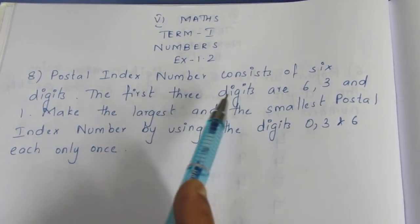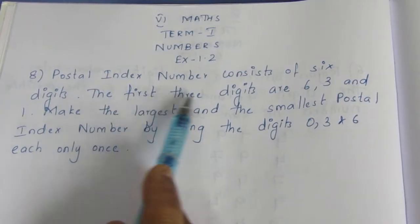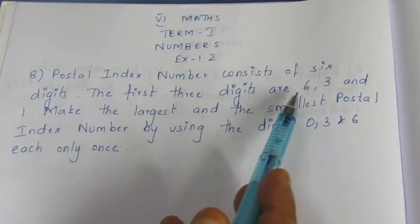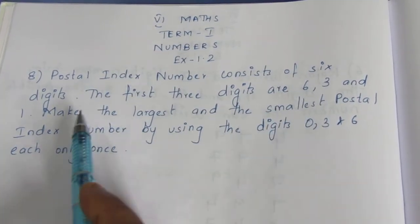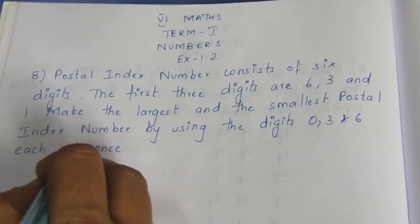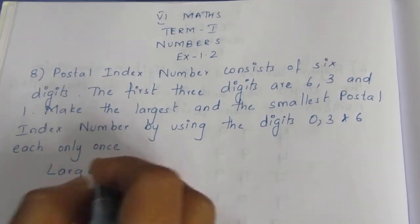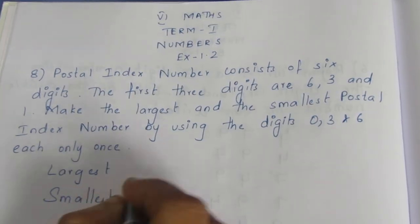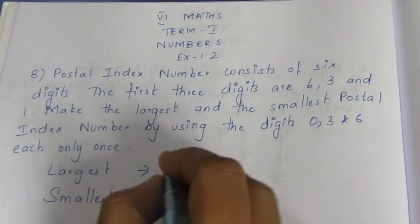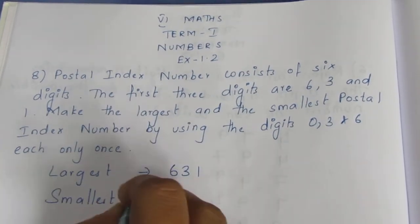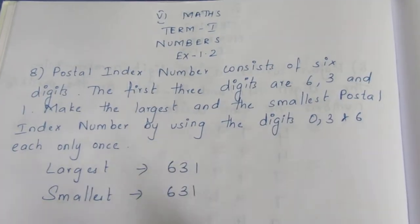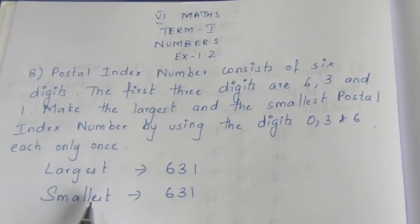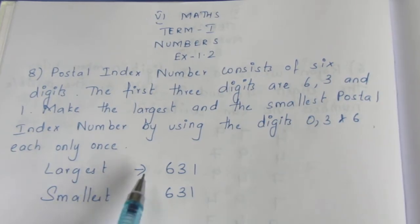So it is a 6-digit number. For this 6-digit number, the first 3 digits are fixed. So the pin code's first 3 digits are 6, 3, 1 — these are fixed. Now for the largest number, and for the smallest number, we need to find the arrangement. For the balance 3 remaining digits, we need to find the largest number and the smallest number.